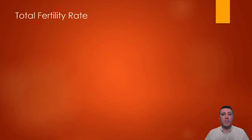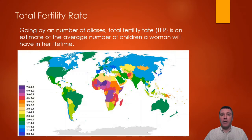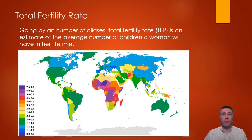Total Fertility Rate, or TFR, is a statistic that goes by many other names. It is an estimate of the average number of children that a woman will have in her lifetime. This world map illustrates the TFR by country. Those countries color-coded in shades of blue and green have a total fertility rate of around 2 or below, while those in orange, red, and purple have increasingly higher TFRs, reaching as many as 7 or 8 children per female.